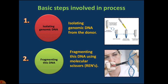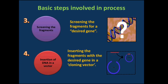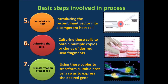The desired piece of DNA is isolated and then fragmented. The next step is screening the fragments for the desired gene, selecting the desired gene, and then inserting the desired gene fragment into the cloning vector — a plasmid — thereby creating a recombinant DNA. Then the recombinant DNA vector is introduced into a competent host cell, normally a bacterial cell. The cells are cultured to obtain multiple copies of the desired DNA fragments, which are used to transform suitable host cells so they express the desired gene products.